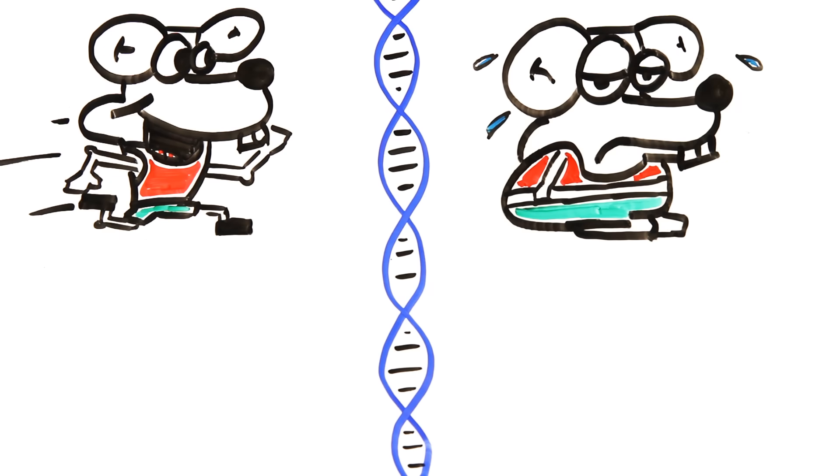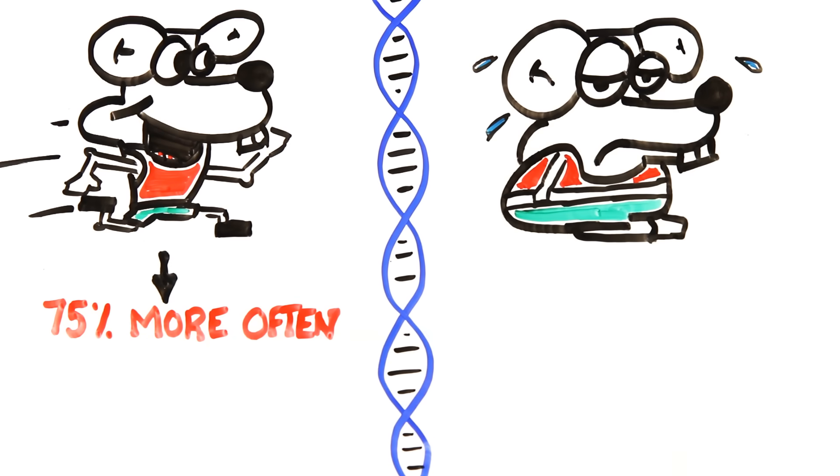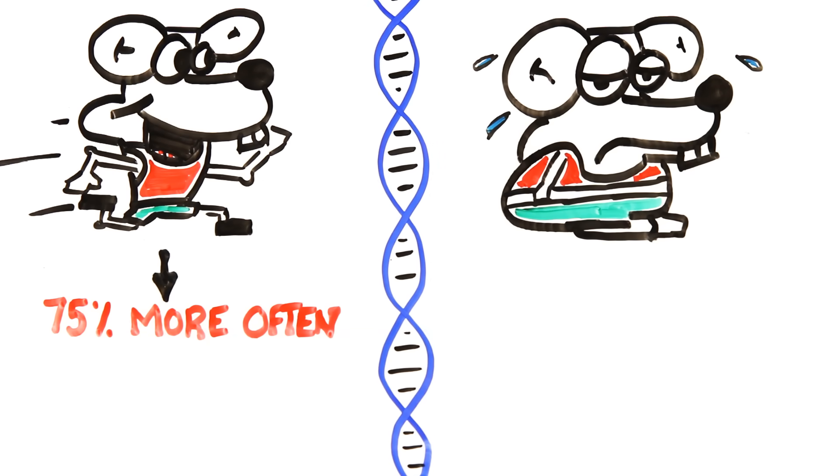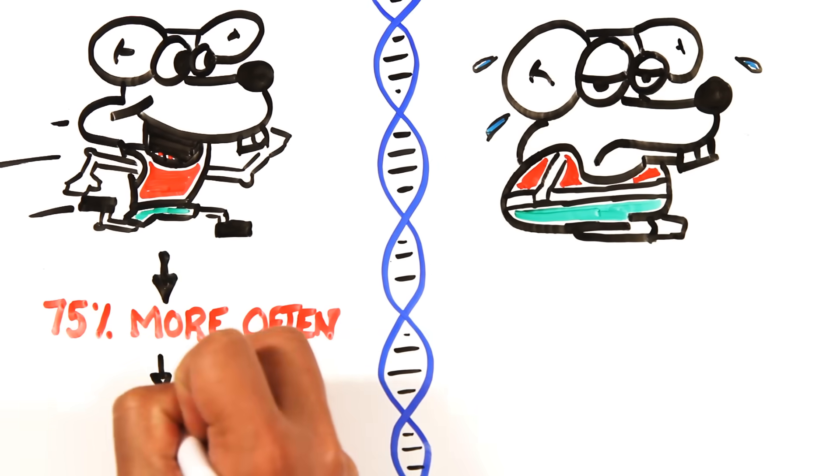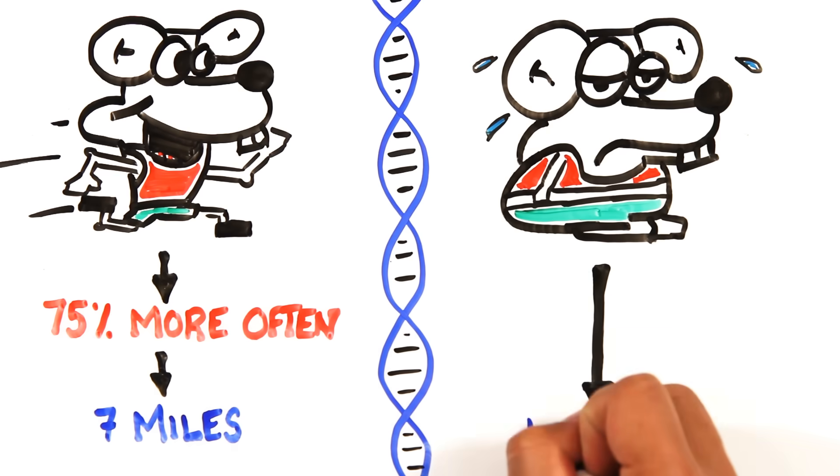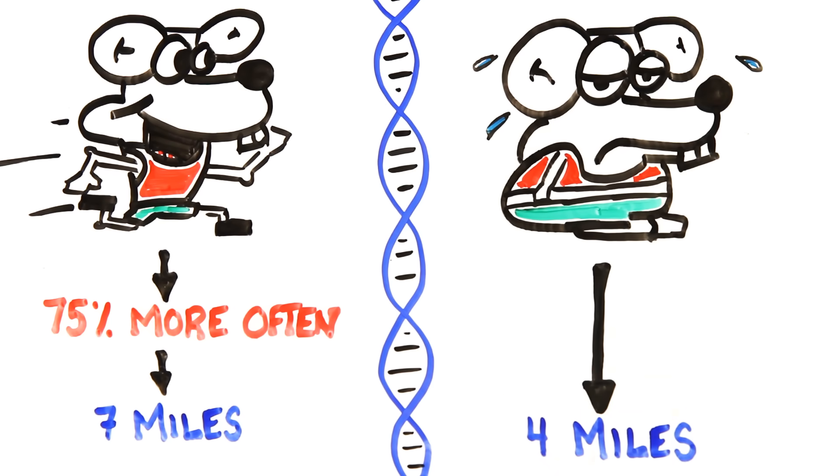the difference was clear in their offspring. After 10 generations, the running mice would run on their wheels 75% more often than the other group and by 16 generations they were running 7 miles a day as opposed to the average 4 miles. It seemed their motivation for physical activity was genetic.